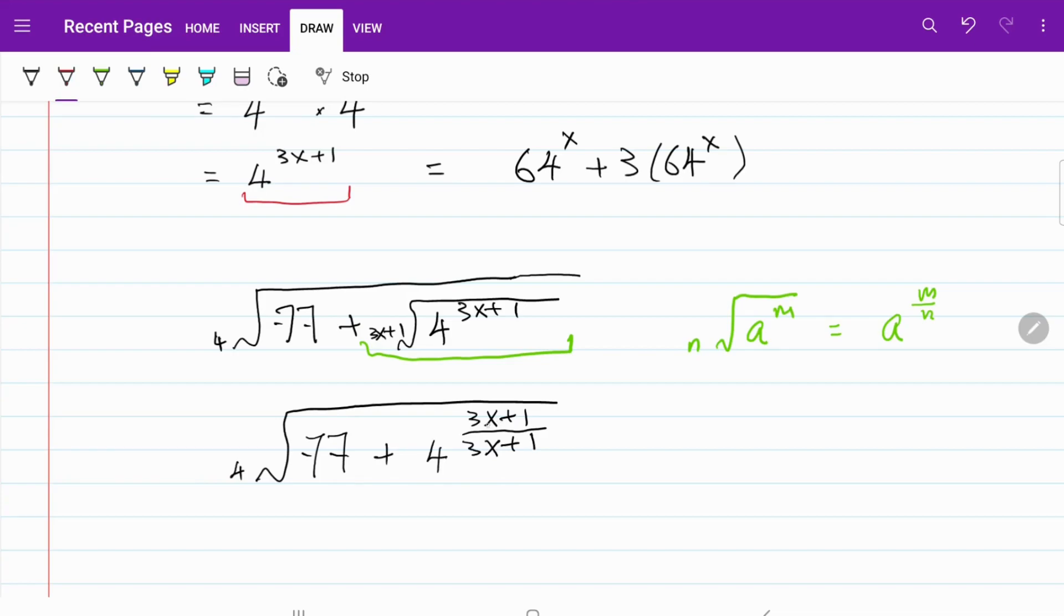Obviously this part right here will cancel each other. And now what we end up with is 77 plus 4 to the fourth root.